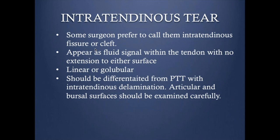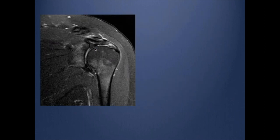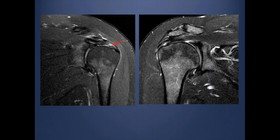You have to be careful — scroll very carefully in your sagittal and coronal images to see if there is any extension to the articular or bursal surface. This is an example where you can see an abnormal fluid signal within the tendon with the articular fibers and bursal fibers intact — an example of an intrasubstance tear. Another example shows a linear signal with both bursal and articular fibers intact, also called an intrasubstance tear.